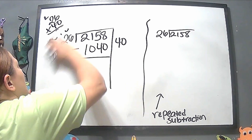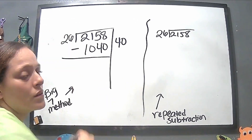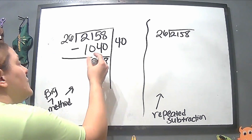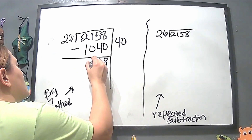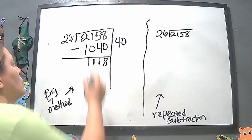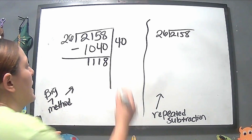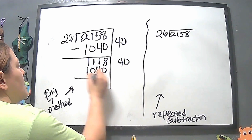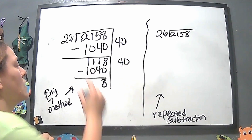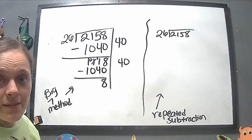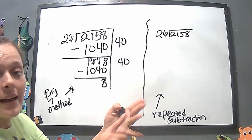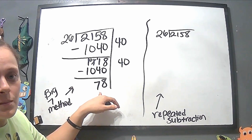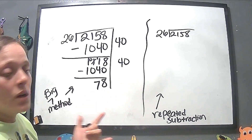So we subtract 1040. Eight minus zero is eight, five minus four is one, one minus zero is one, two minus one is one — leaving 1118. We can do another 40, which gives us another 1040. Subtracting again: eight minus zero is eight, regroup — eleven minus four is seven, zero minus zero is zero. That leaves 78. Now 26 goes into 78: since 26 times two equals 52 — like splitting a deck of cards — we'll try two.